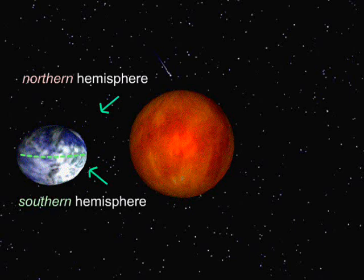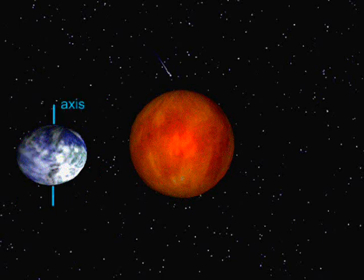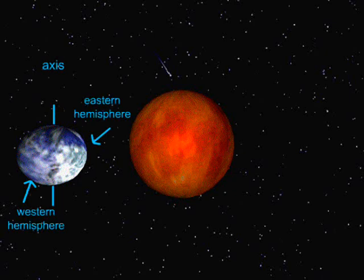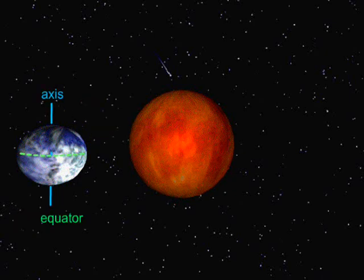The other imaginary line is the axis. The axis is an imaginary line that goes through the North Pole and the South Pole of the Earth. The axis divides the Earth into two hemispheres — the Eastern and the Western Hemisphere. Together, the equator and the axis help scientists and others locate different places on our planet Earth.